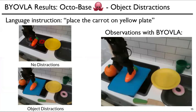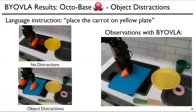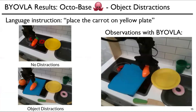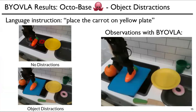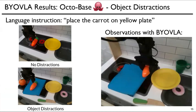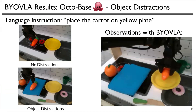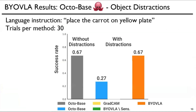We can see Bring Your Own VLA in action, where we first evaluate it on OctaBase with the pick-and-place carrot task. Task-irrelevant objects that OctaBase is sensitive to are dynamically removed during policy execution. We find that with Bring Your Own VLA, OctaBase performance is improved by 40% in the presence of task-irrelevant distractions.